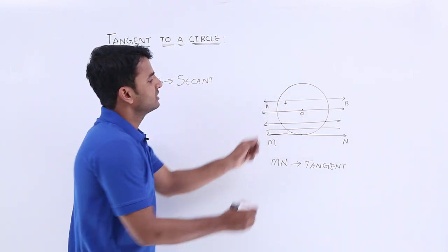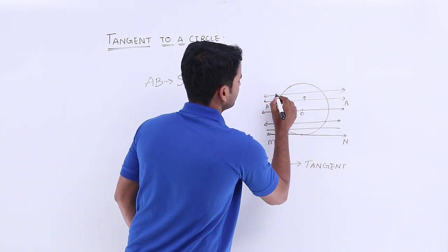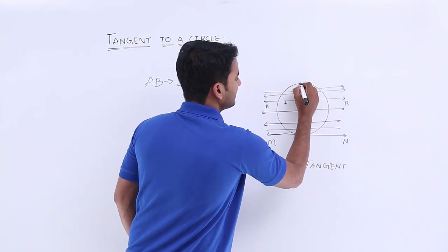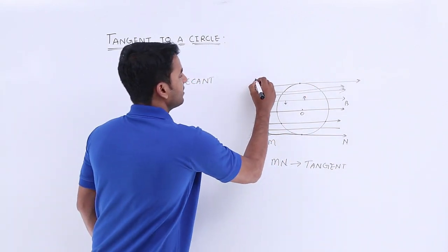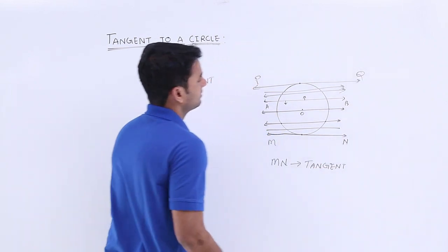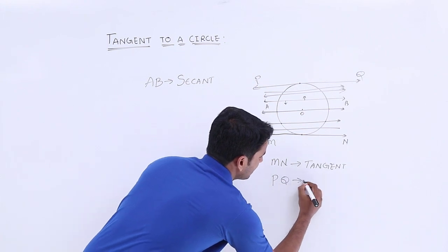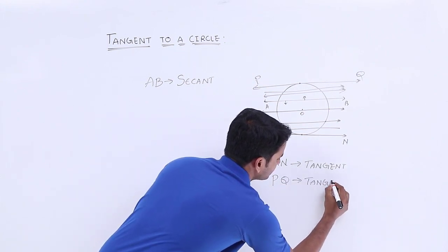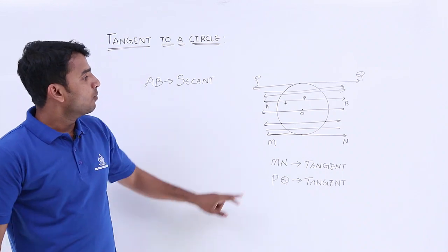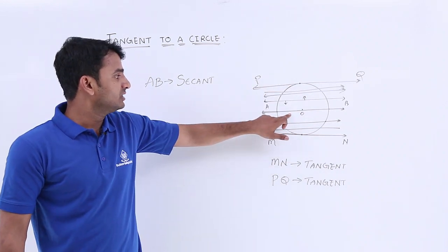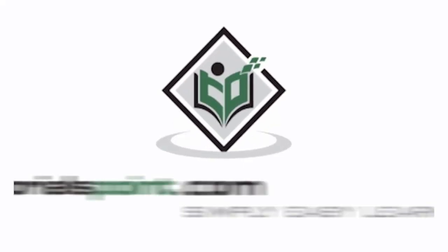If we repeat the same process in the upward direction, we get secants, and at one particular point we get a line with only one point of contact — let's call this line PQ. PQ also has only one point of contact, so it is also considered a tangent. Based on this, we can conclude that there cannot be more than two tangents parallel to a given secant AB.